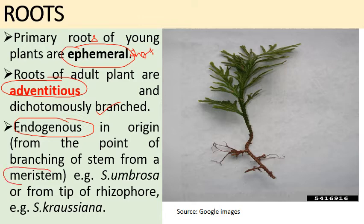The adventitious roots are endogenous in origin — arising from the point of branching of the stem, from a meristem called the angle meristem, for example in Selaginella umbrosa. Roots may also arise from the tip of the rhizophore, for example in Selaginella krausiana.